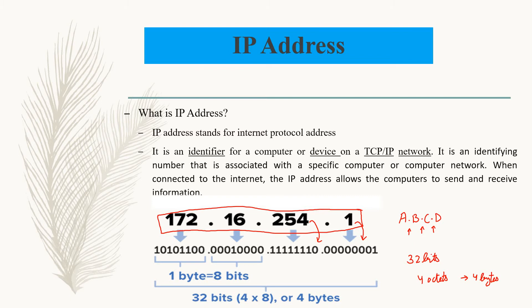You can write it in the form of dotted decimal notation or in the form of binary notation — both are correct. The difference is that the binary format is used by the computer to understand it. But for us humans, it's very difficult to use or understand a stream of zeros and ones. So we prefer the decimal dotted notation, that is decimal numbers separated with dots.